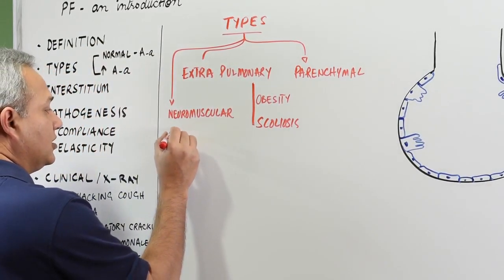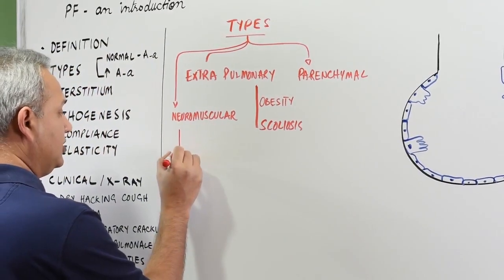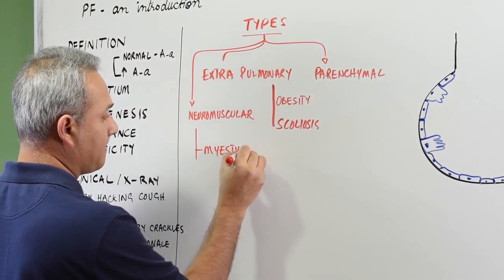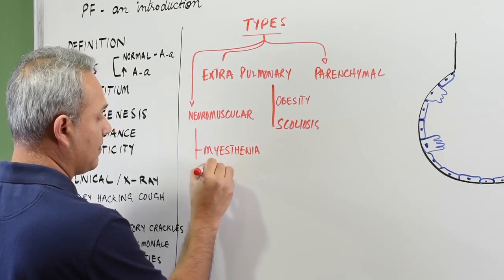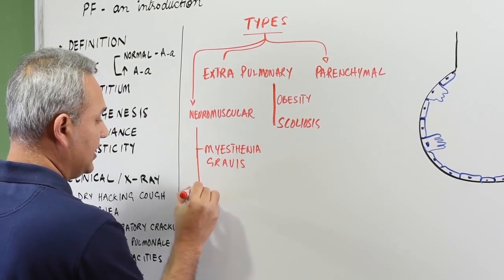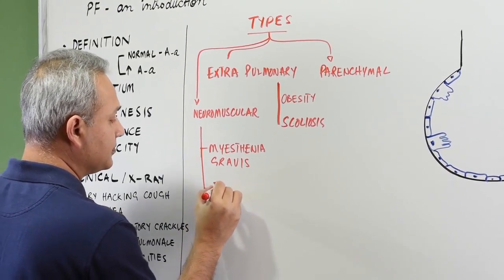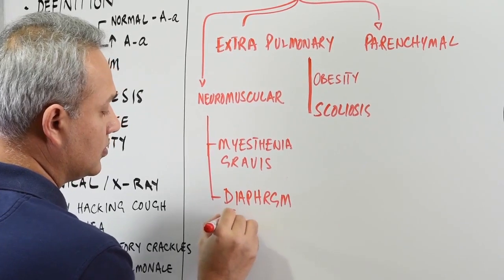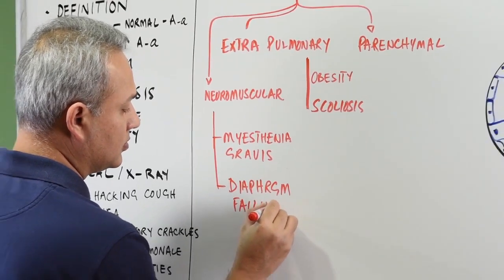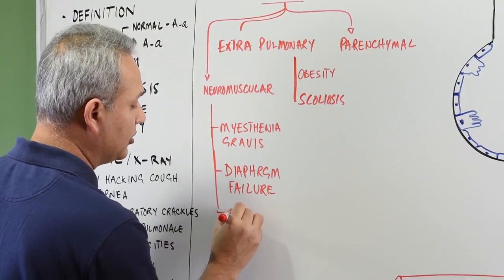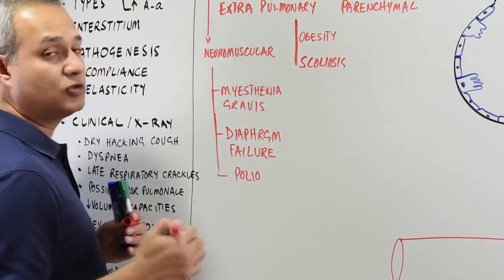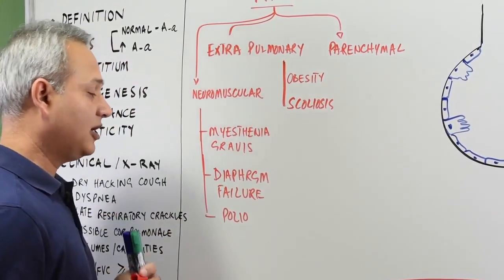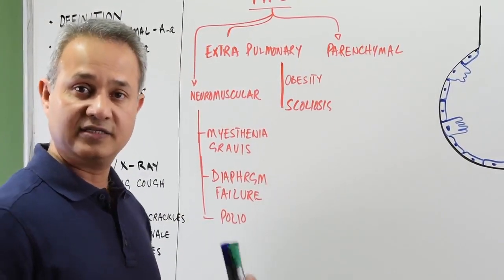On the neuromuscular, there could be, for example, myasthenia gravis, there can be problem with the diaphragm, there can be polio and so on. So, neuromuscular includes myasthenia gravis, diaphragmatic failure or poliomyelitis.